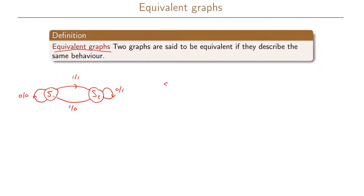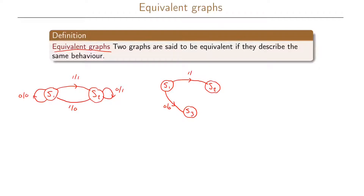Let us now look at another graph in which we have three different states: S1, S2, and S3. From S1, with input 0 we have output 0 and we go to S3. When we have input 1 we go to S2 with output 1.